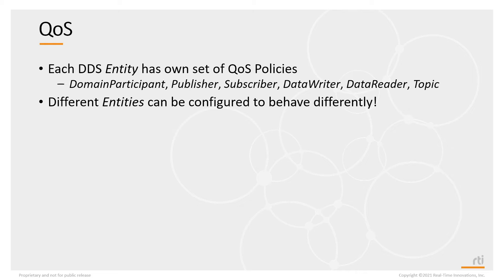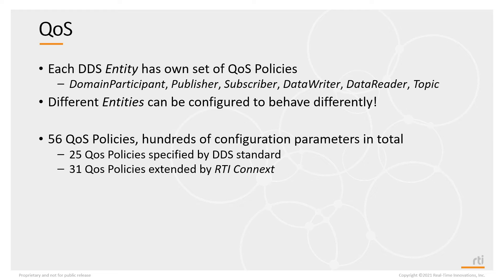Even different instances of the same entity — for example, if you have more than one data writer or more than one data reader — can be configured to behave differently with different values for their QoS policies. There are 56 QoS policies offered by RTI Connext DDS, and 25 of these policies are specified by the DDS standards, so fundamentally any DDS implementation should be offering these 25 QoS policies. An additional 31 QoS policies are extended policies specific to the RTI Connext DDS implementation.